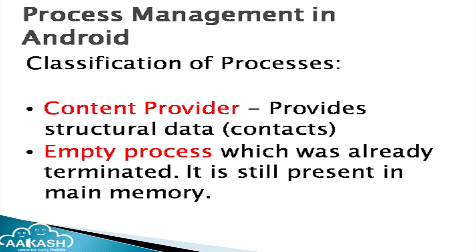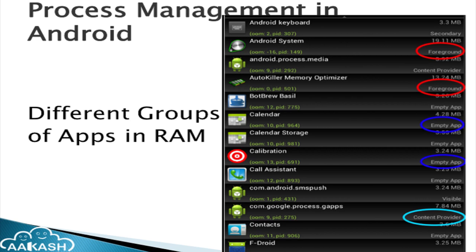Empty processes: even though the user terminated an app, the code belonging to that application still remains inside the RAM. This snapshot from the Akash tablet lists different applications residing inside the RAM. The apps highlighted in red are foreground applications, and those highlighted in blue are content provider applications. Most of the time our RAM is filled with many kinds of applications — empty, foreground, content providers — and there are many empty applications present.